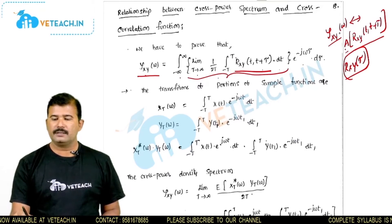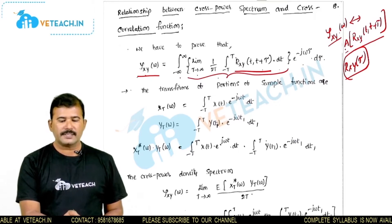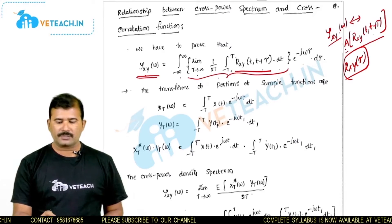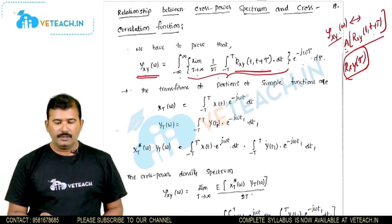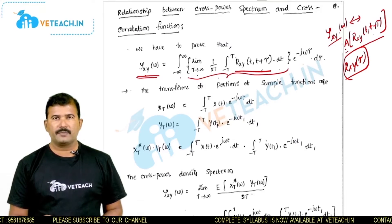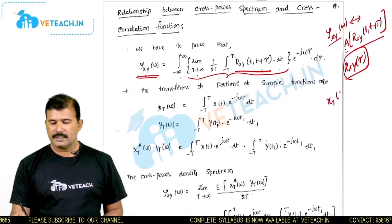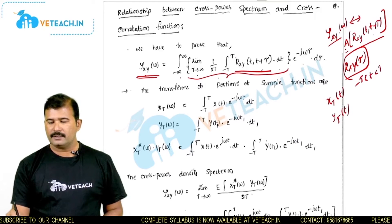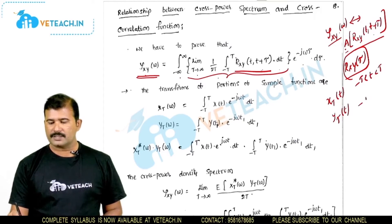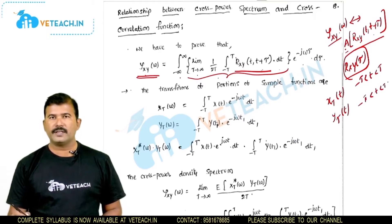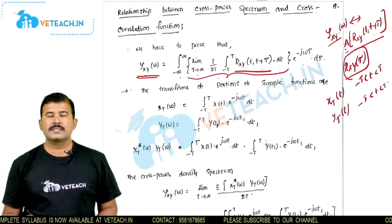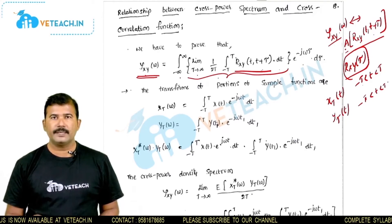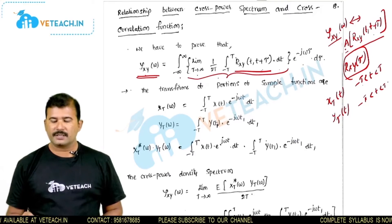Now let us prove this. Initially we establish that ψ_xy(ω) and the time average of the cross correlation function are a Fourier transform pair. The sample functions x_T(t) and y_T(t) are defined in the interval minus T to T. We assume these two functions have finite energy in that interval, so the Fourier transform exists for both sample functions.